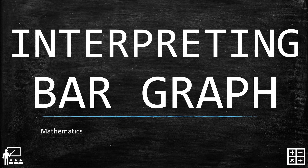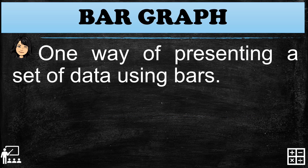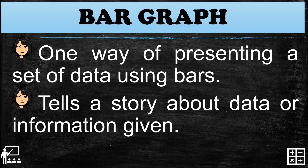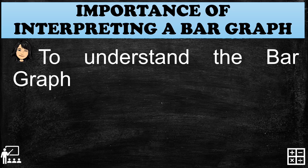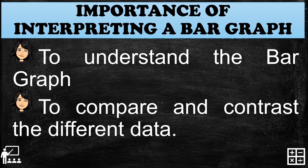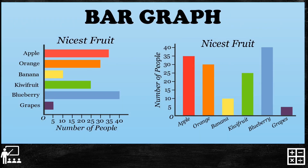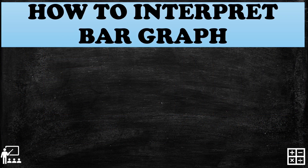This video lesson is about interpreting bar graphs. A bar graph is one way of presenting a set of data using bars, and it tells a story about data or information. The importance of interpreting a bar graph is to understand the graph itself and to compare and contrast the different data. A bar graph can be classified according to the data, and data can be drawn horizontally and vertically. I will show you how to interpret the bar graph.